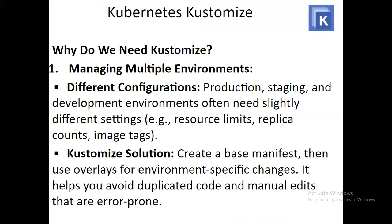Why do we need Kustomize? The first reason is managing multiple environments. Different environments — production, staging, and development — often need slightly different settings, for example resource limits, replica counts, and image tags. The Kustomize solution is to create a base manifest and then use overlays for environment-specific changes. This helps you avoid duplicated code and manual edits that are error-prone.